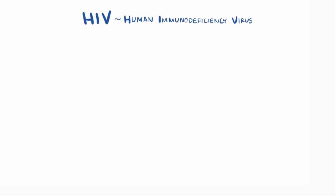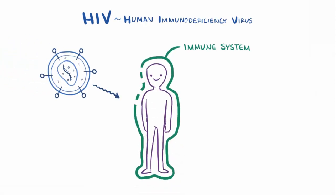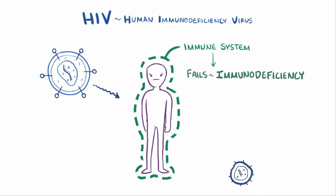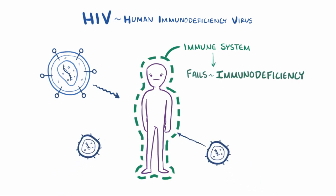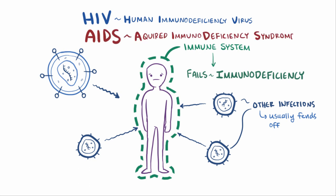HIV, or human immunodeficiency virus, is a virus that targets cells in the immune system. Over time the immune system begins to fail, which is called immunodeficiency, and this increases the risk of infections and tumors that a healthy immune system would usually be able to fend off. These complications are referred to as AIDS, or acquired immunodeficiency syndrome.